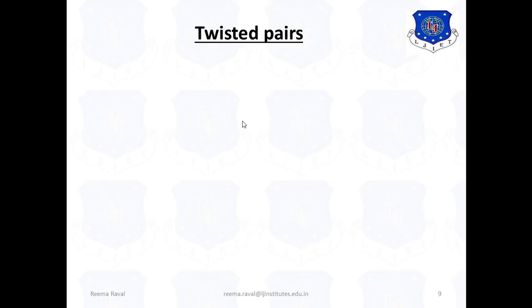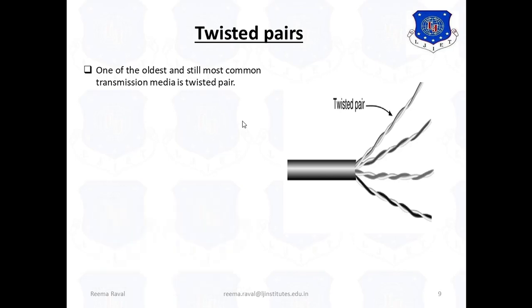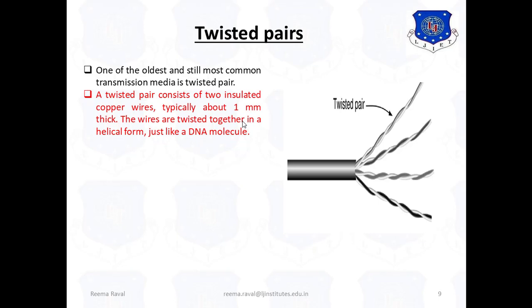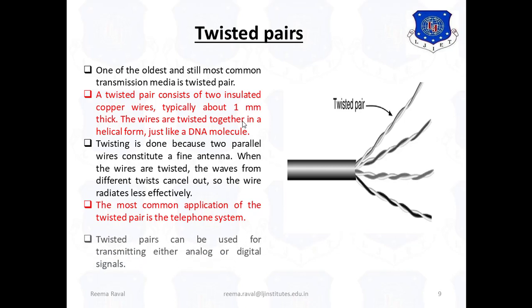Now, next one is twisted pair. One of the oldest and still most common transmission media is twisted pair. A twisted pair consists of two insulated copper wires typically about 1 mm thick. These wires are twisted together in a helical form just like a DNA molecule. Twisting is done because two parallel wires constitute a fine antenna. When the wires are twisted, the waves from different twists cancel out so the wire radiates less effectively. The most common application of twisted pair is the telephone system. Twisted pairs can be used for transmitting either analog or digital signals. And the bandwidth depends on the thickness of the wires and distance travelled.